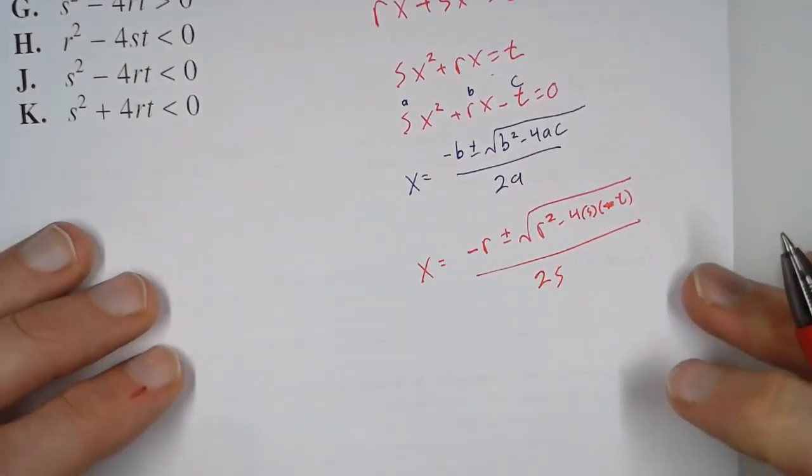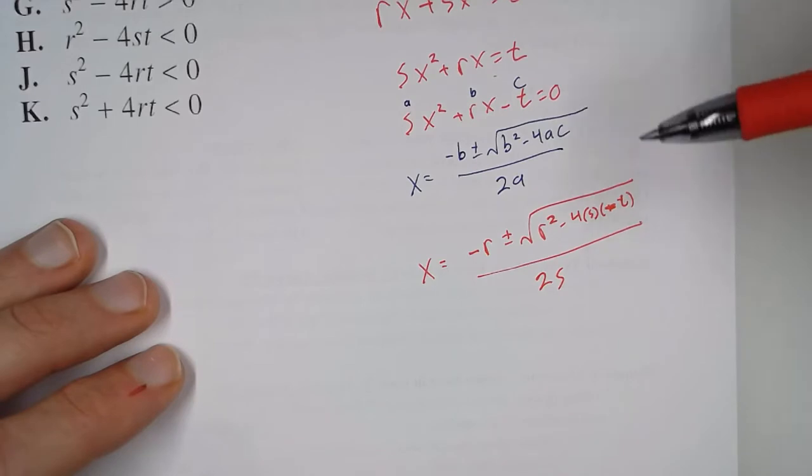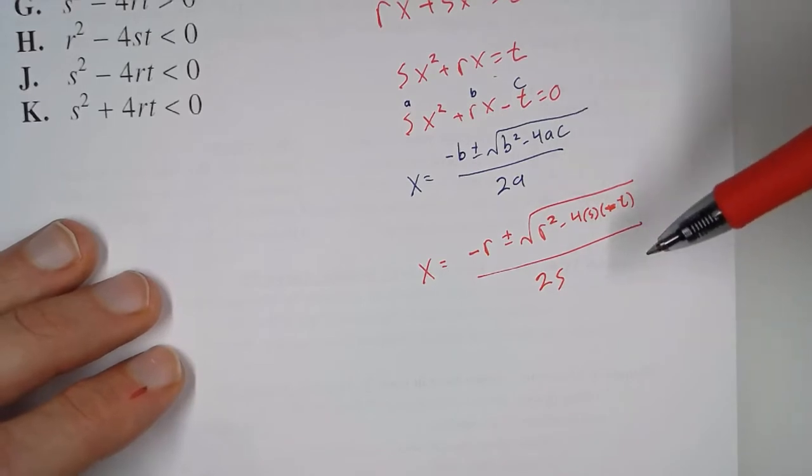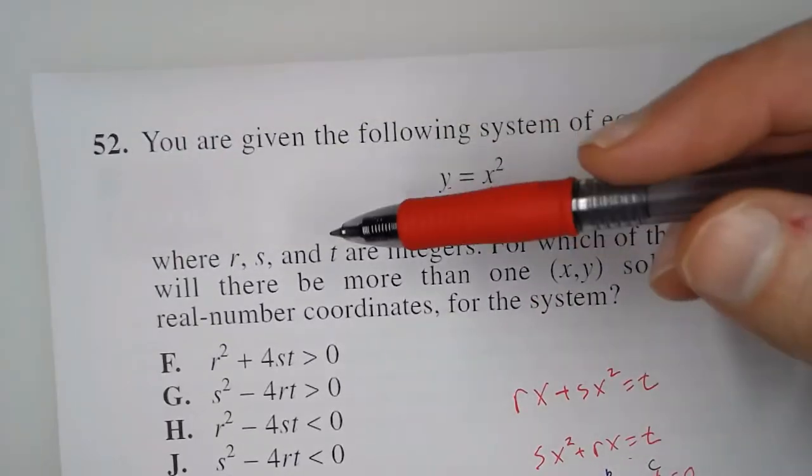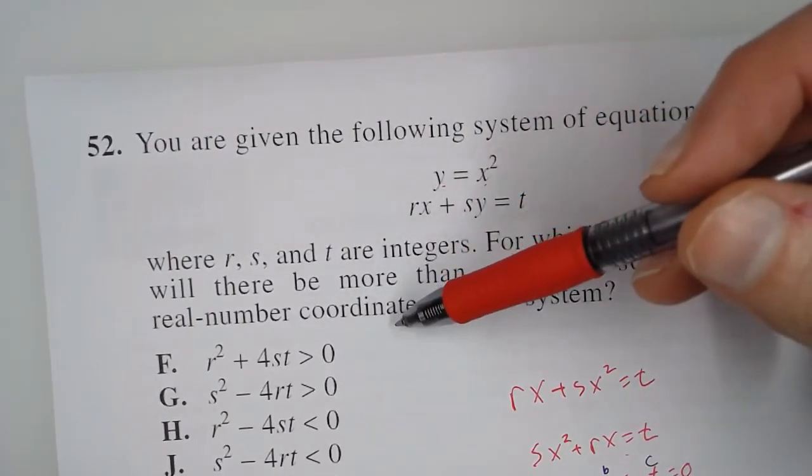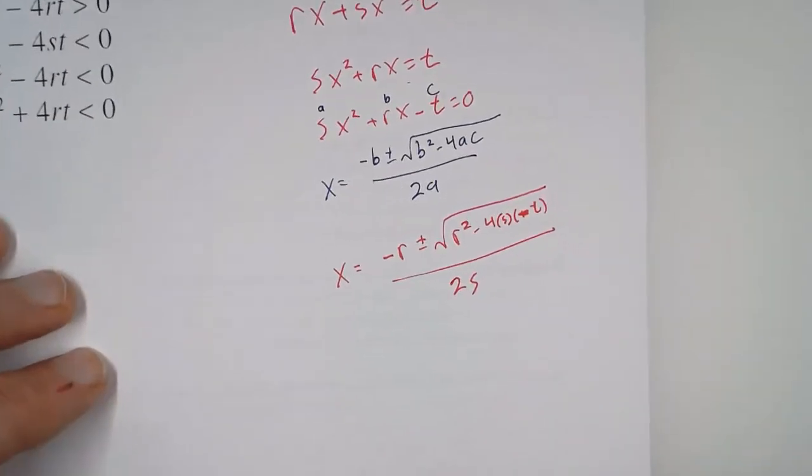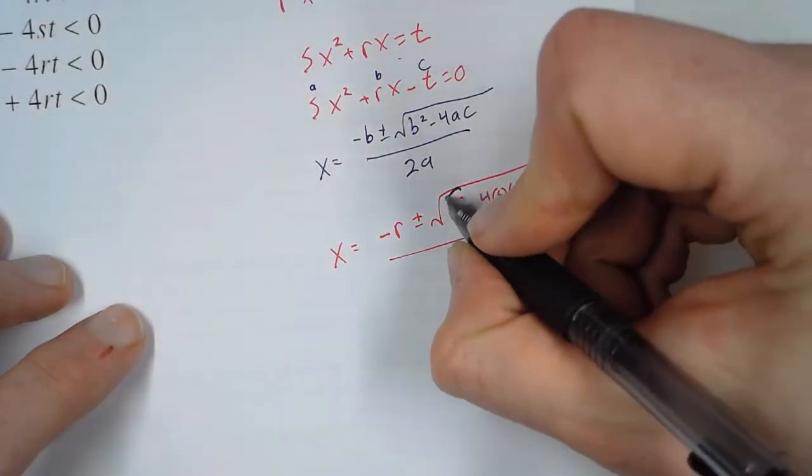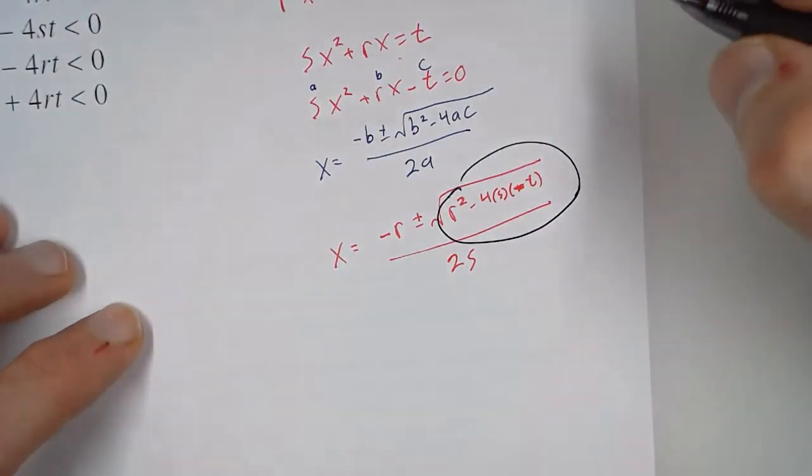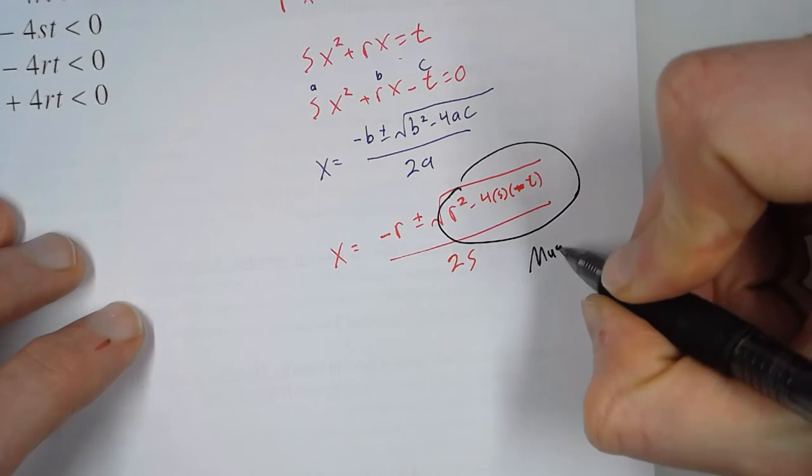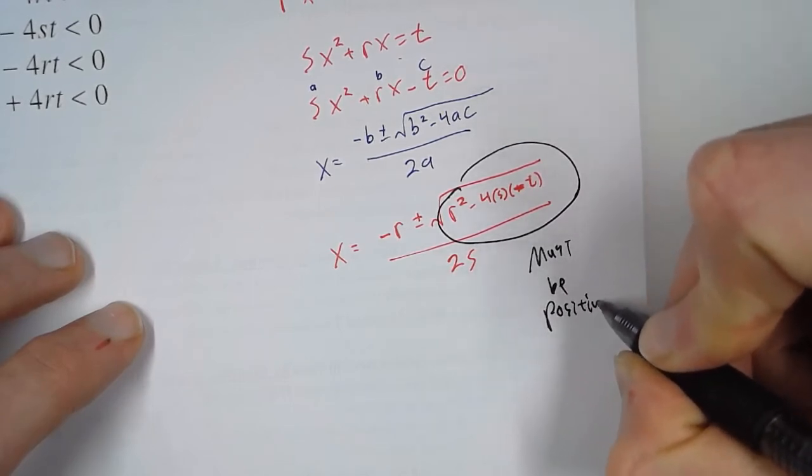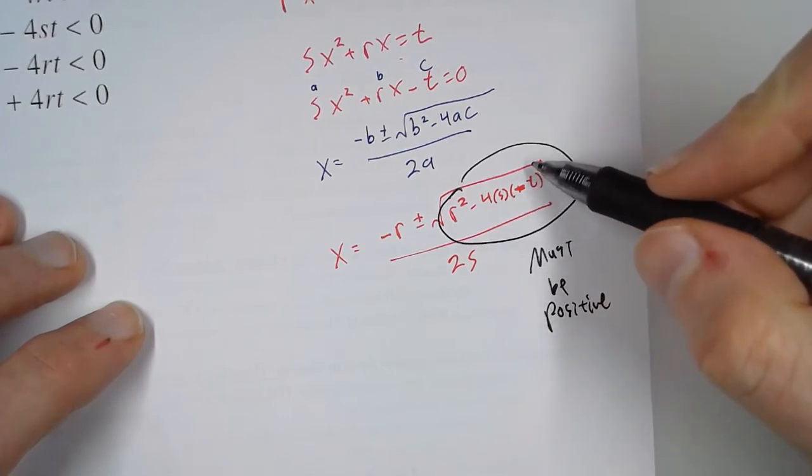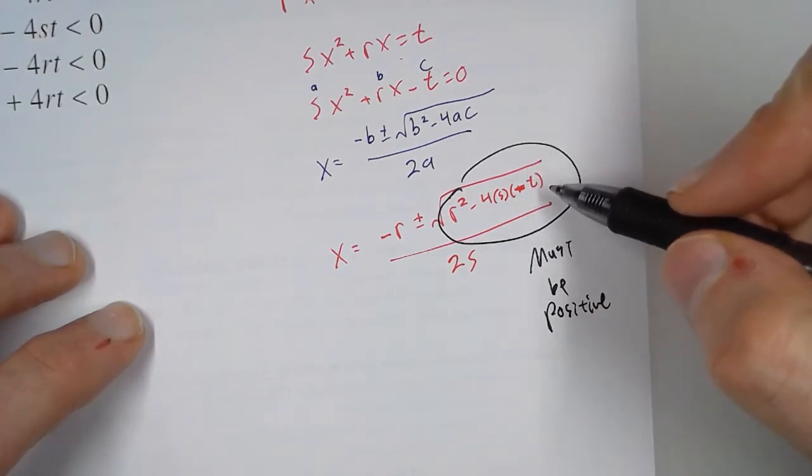Now, in algebra, you learned that sometimes quadratics can give you complex answers, but this problem doesn't want that. What this problem wants is two different real number coordinates. So what has to happen then is that this part under the radical must be positive. If it's zero, then we're going to get two identical answers, and if it's negative, then we're going to get complex.